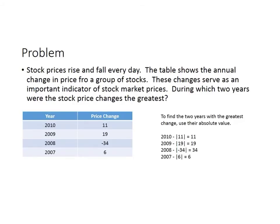Let's look at a problem where we would use absolute value. Stock prices rise and fall every day. The table shows the annual change in price for a group of stocks. These changes serve as an important indicator of stock market prices. During which two years were the stock price changes the greatest?